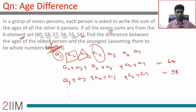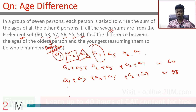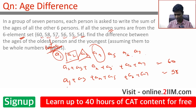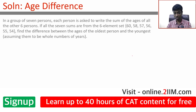One of these numbers appears twice. That's why seven sums are coming from a six-element set. We need to find the difference between the oldest and youngest person, assuming whole number ages.